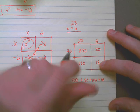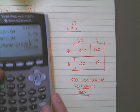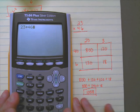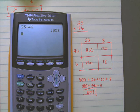And if you go through and you actually check this on a calculator, you will see that 23 times 46 is indeed 1,058.